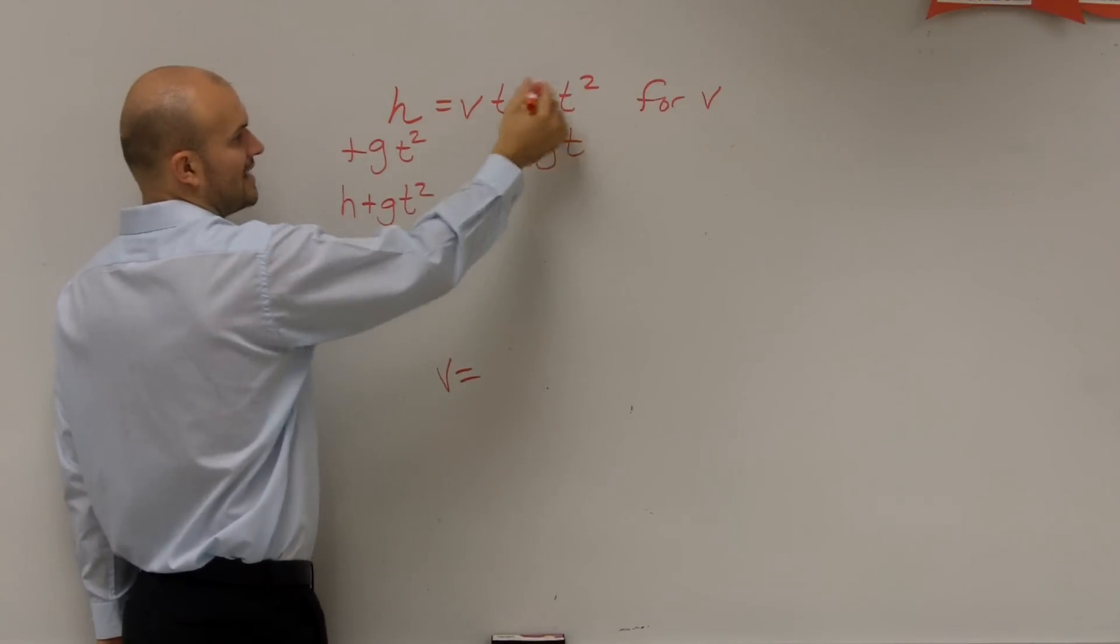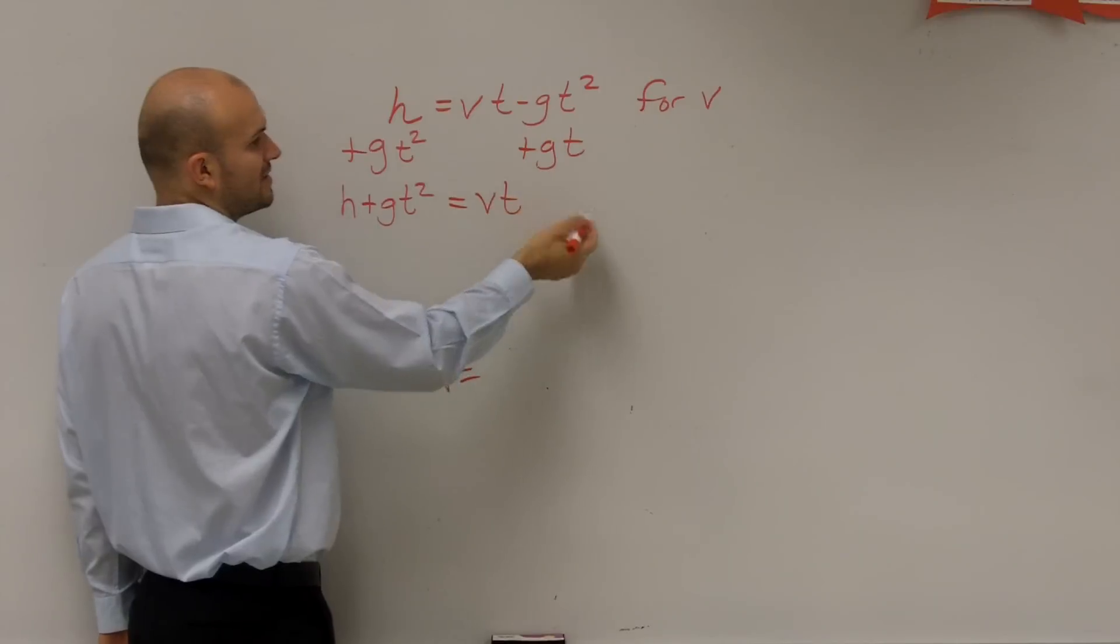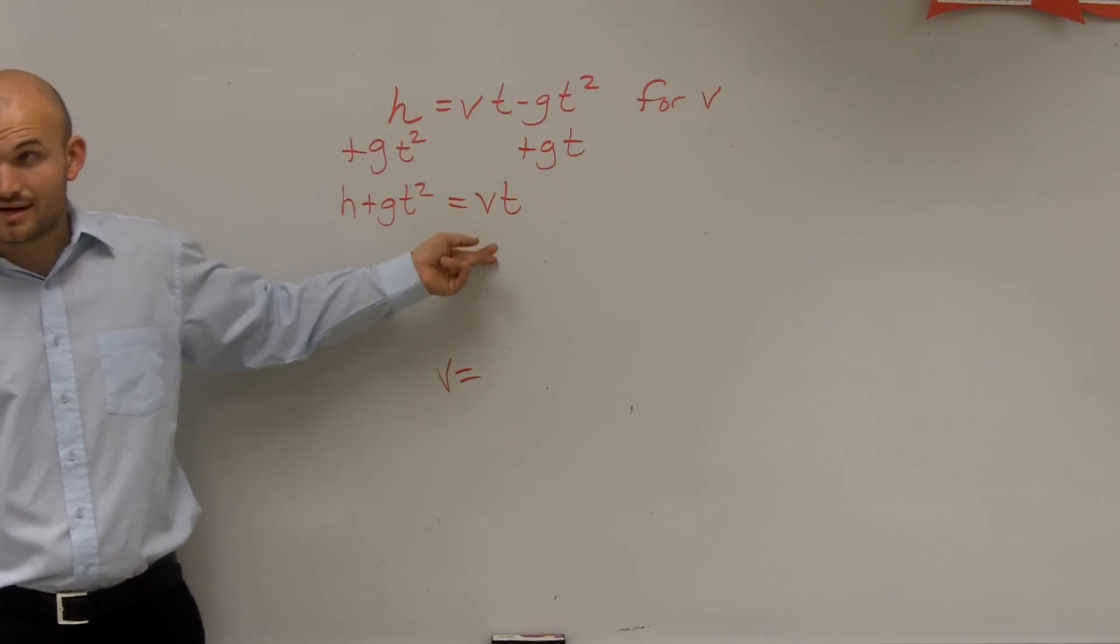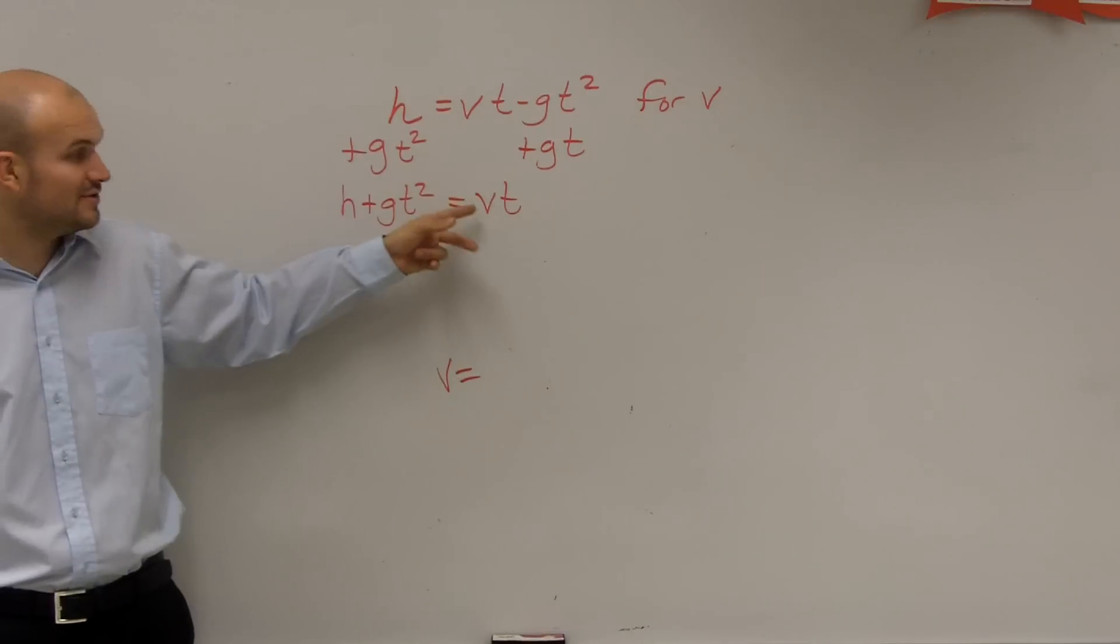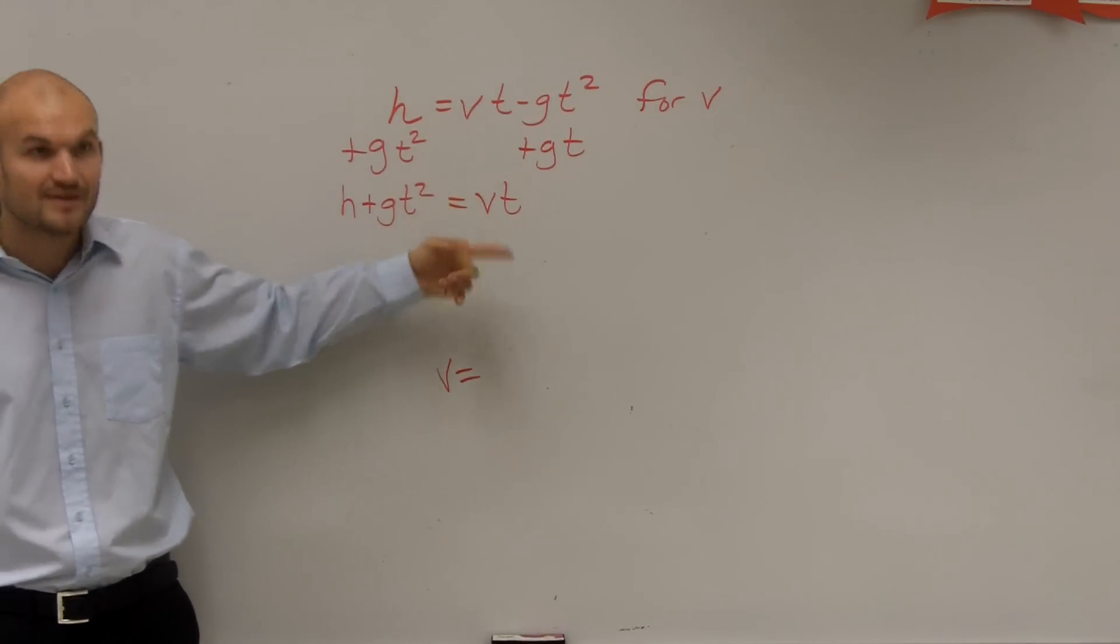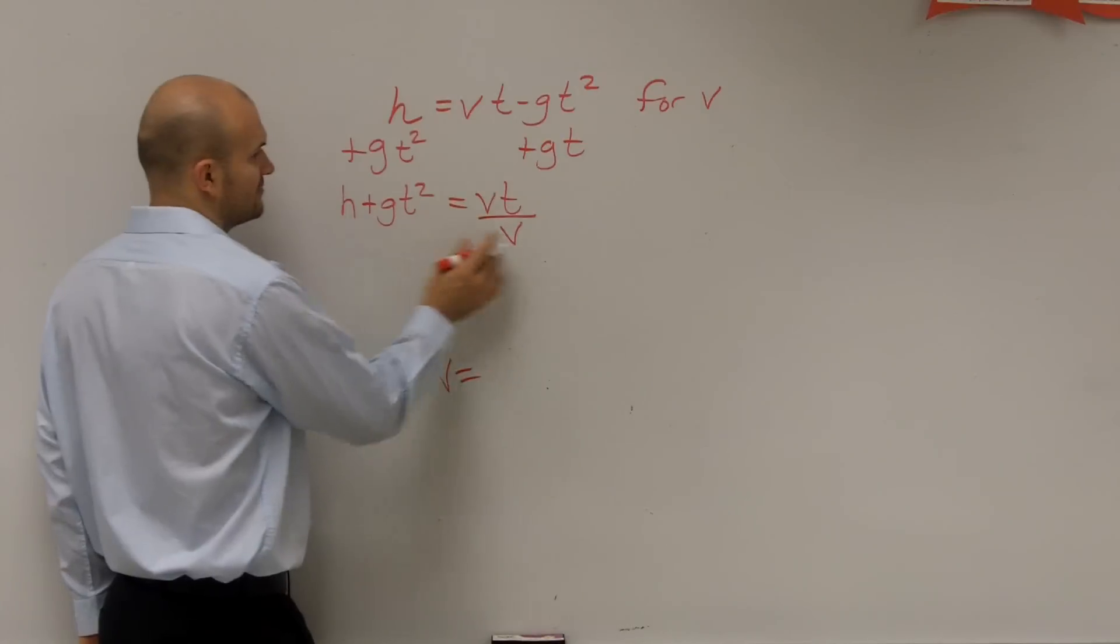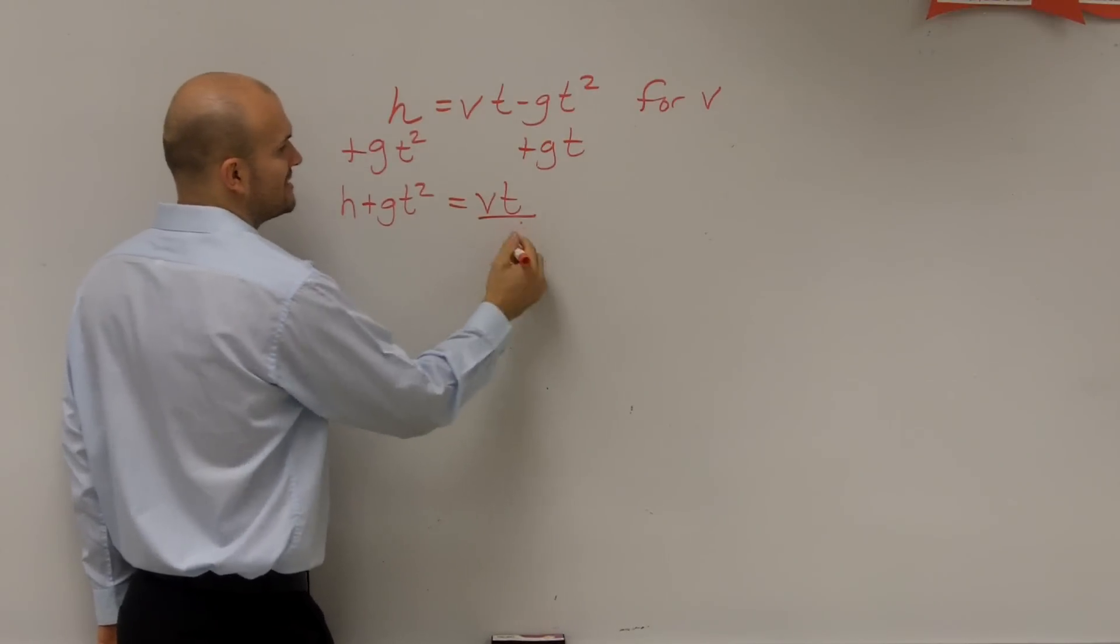Equals v t, that goes to zero. v t plus zero is just v t. Now, I'm almost there. Now what's happening to the v that's preventing it from being by itself? It's being multiplied by t. The inverse of multiplication is to divide - not by v - divide by t.